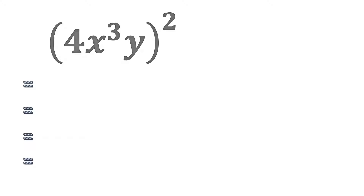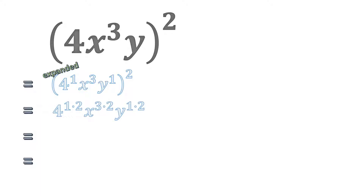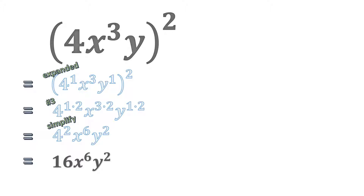Our next example is in brackets: 4x to the power of 3 times y, all multiplied by the power of 2. We note that 4 is to the power of 1 and y is to the power of 1. We then distribute the outside power of 2 to each part, multiplying 1 by 2, 3 by 2, and 1 by 2 — applying our third rule. This gives us 4 squared times x to the power of 6 times y squared, which simplifies to 16x to the power of 6 y squared.